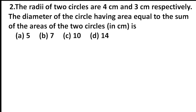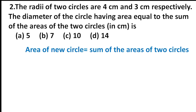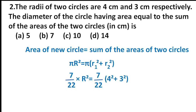Moving to the second question. The radii of two circles are 4 cm and 3 cm respectively. Find the diameter of the circle having area equal to the sum of the areas of the two circles. What is given: radii r1 and r2 are 4 and 3 cm, and the area of the new circle equals the sum of the areas of the given circles. Area is πR², so πR² = π(r1² + r2²). Pi cancels out.